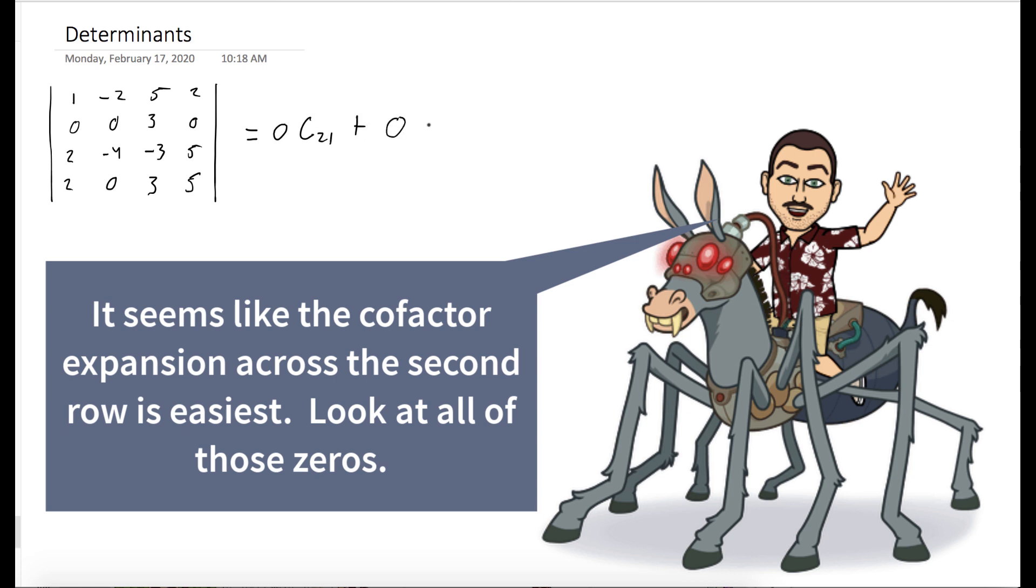Clearly, the second row has the most zeros, so our determinant has this as its cofactor expansion.